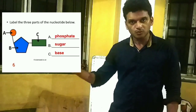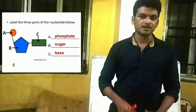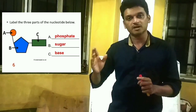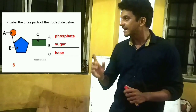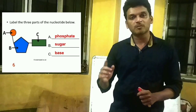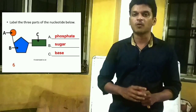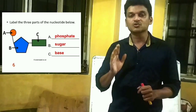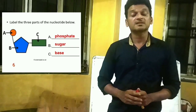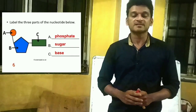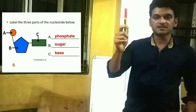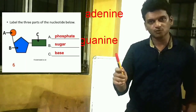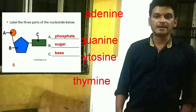Each nucleotide is made up of three different components. The first component is shown by a pentagon shape, which is called pentose sugar. The second component is shown by a circle, called phosphate. The third component is the nitrogen bases. These nitrogen bases are again of four different types: adenine, guanine, cytosine, and thymine.